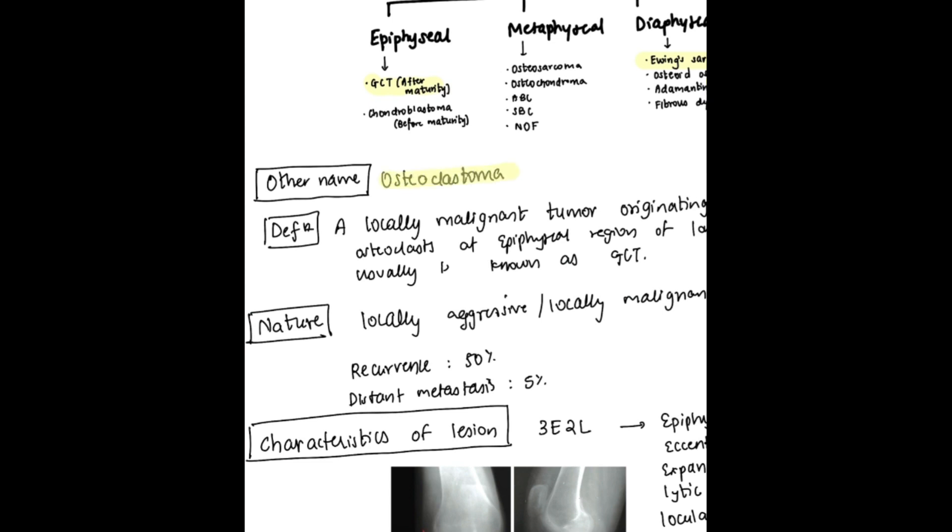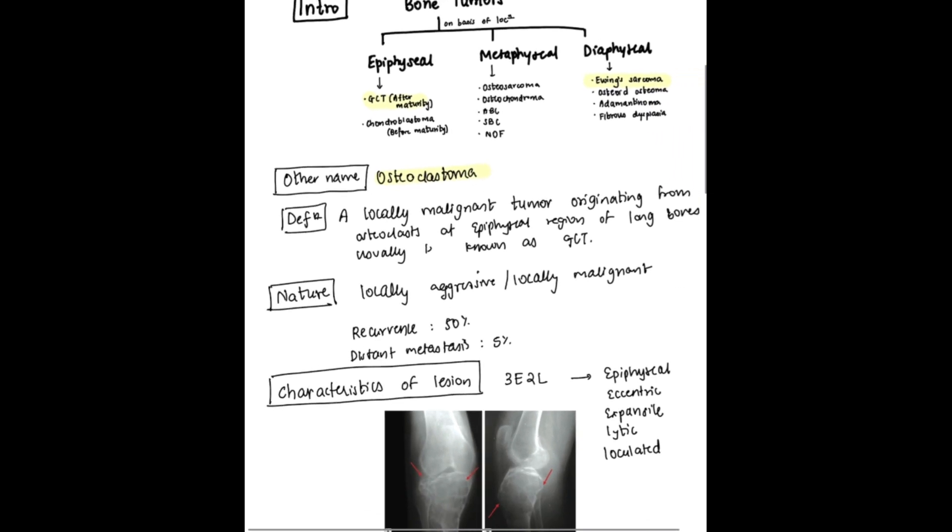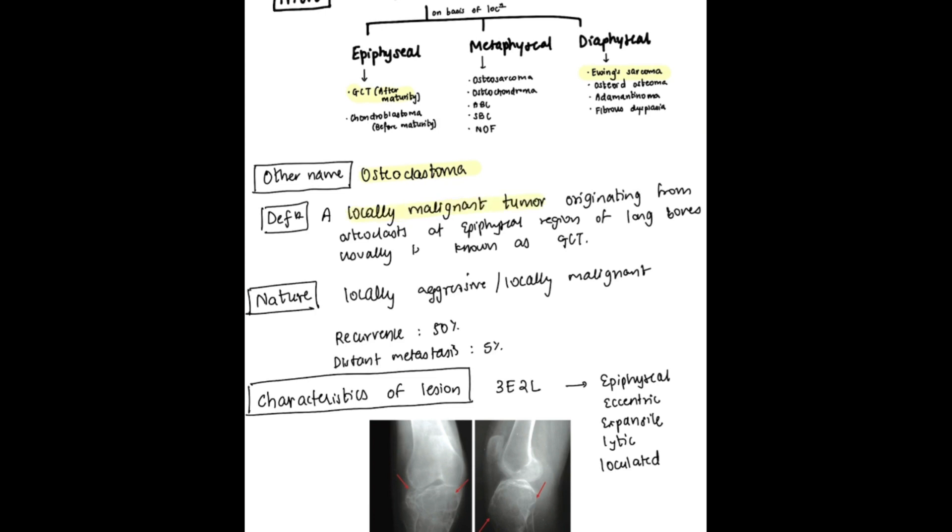Osteoclastoma is the other name of giant cell tumor. The definition goes like: it is a locally malignant tumor originating from the osteoclast, hence osteoclastoma, at the epiphyseal region of usually the long bones, known as GCT giant cell tumor.